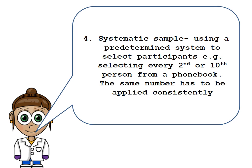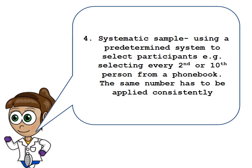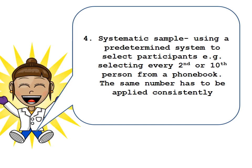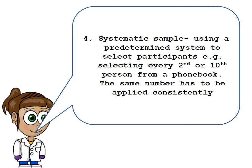The next type of sampling is systematic sampling. This is when we use a predetermined system to select participants — for example, selecting every second or tenth person from a phone book, or every second or tenth person on a register of all school children in London. The same number has to be applied consistently, so if we choose every second person, we need to go in multiples of two.